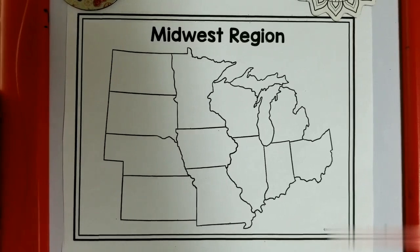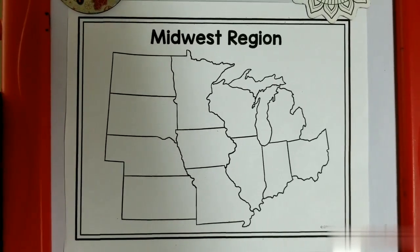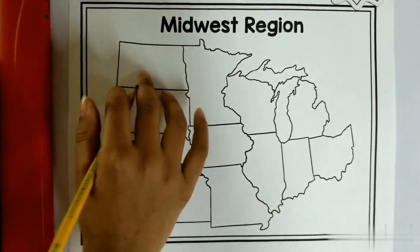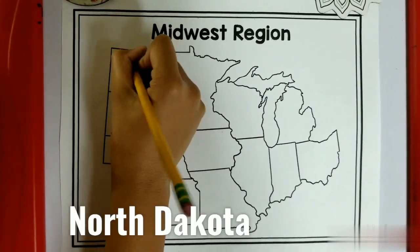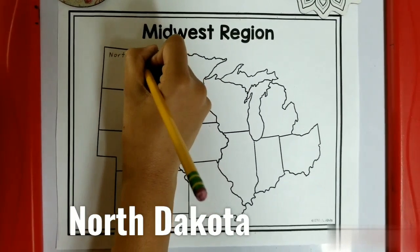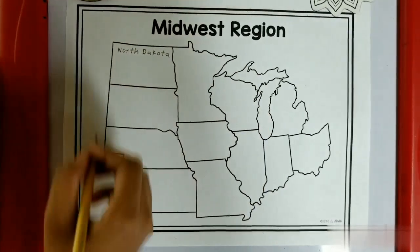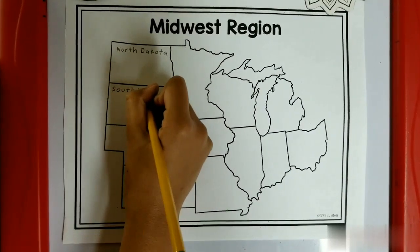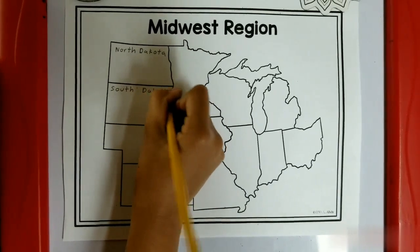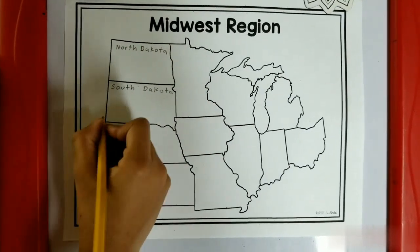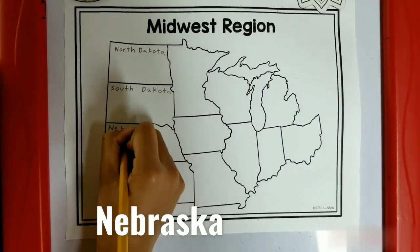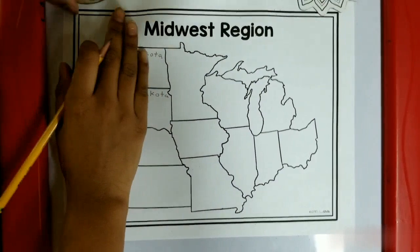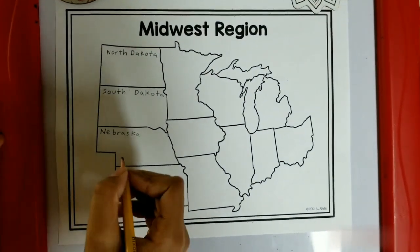This is the Midwest region map. In the Midwest region, we have 12 states, so I'm going to fill them up. The first one over here is North Dakota. The next one is South Dakota. The next one is Nebraska. The next one is Kansas.